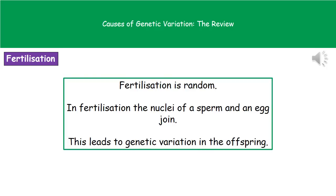The third and final cause is fertilization. Fertilization is random — the nucleus of a sperm joins with the nucleus of an egg and they fuse together. Because it is random which egg is released from the mother and which sperm makes it to fertilize that egg, we get genetic variation in the offspring. So even with the same two parents, the combination of genetically unique gametes and random fertilization results in genetic variation in their offspring.